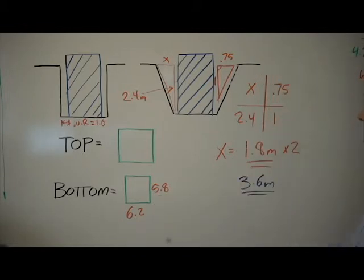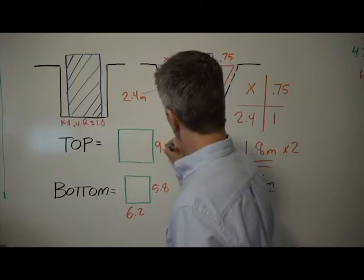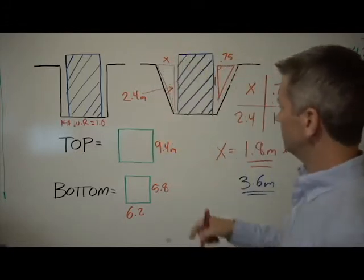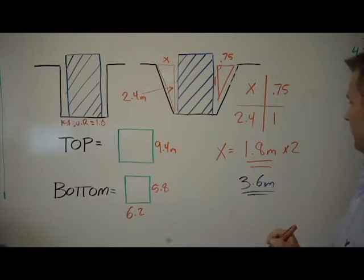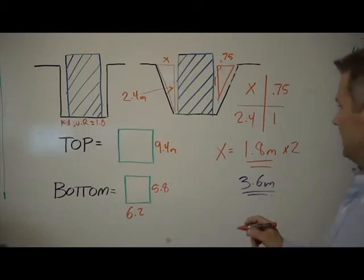So 5.8 plus 3.6 is 9.4. So we have 9.4 meters on that side.